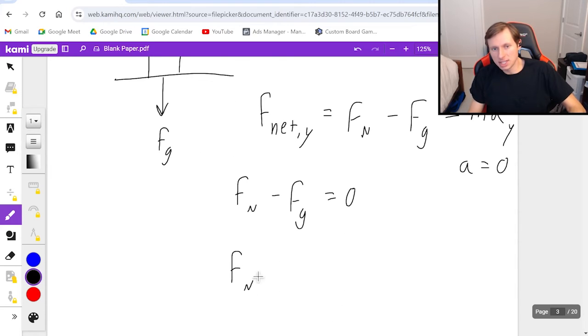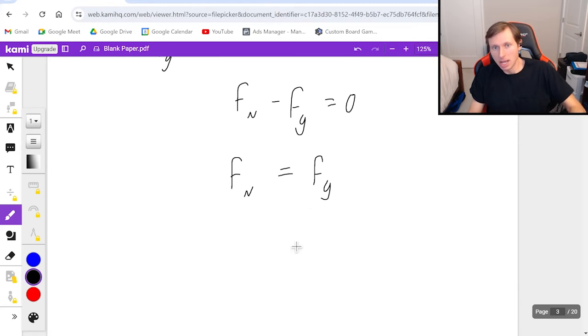Which means the normal force in this case is equal to FG, which by the way, that's the force of gravity. And the force of gravity has the equation FG equals MG, mass times gravity.